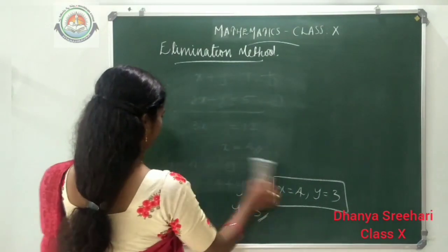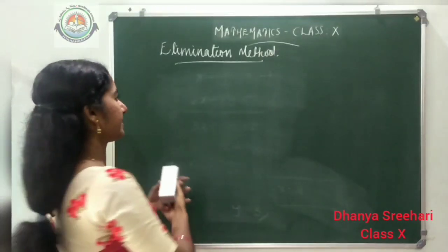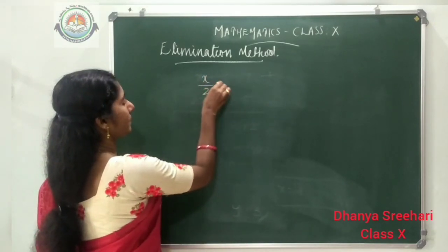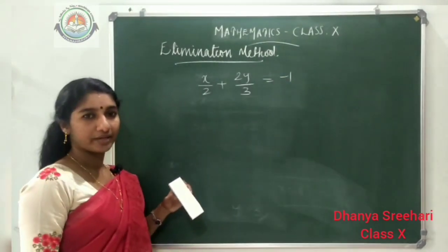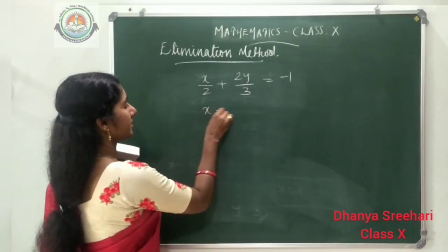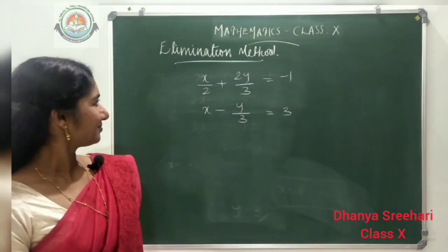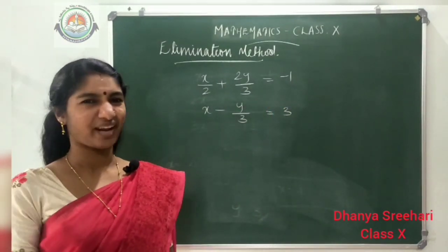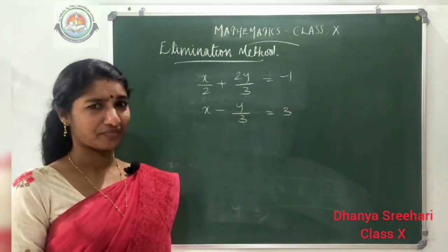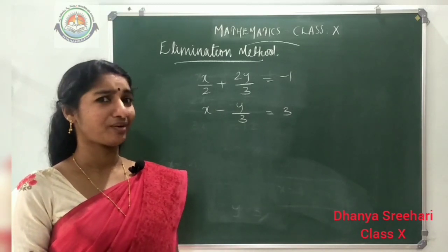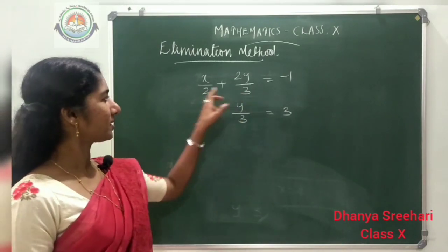Another question: x divided by 2 plus 2y divided by 3 is equal to minus 1. The second equation is x minus y divided by 3 equals 3. Two equations are given with fraction coefficients. We don't like fraction coefficients. What can we do to avoid them? Look at the denominators — the denominator here is 2, and this denominator is 3.